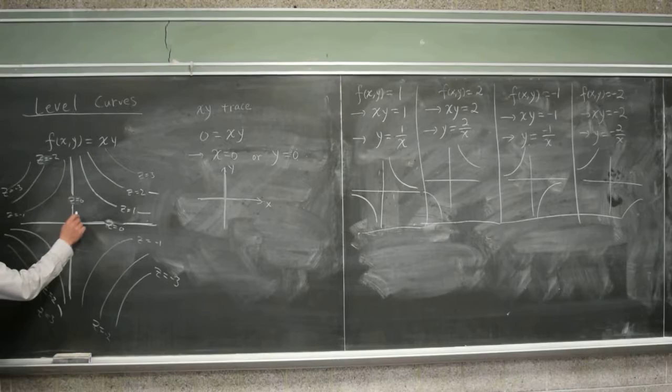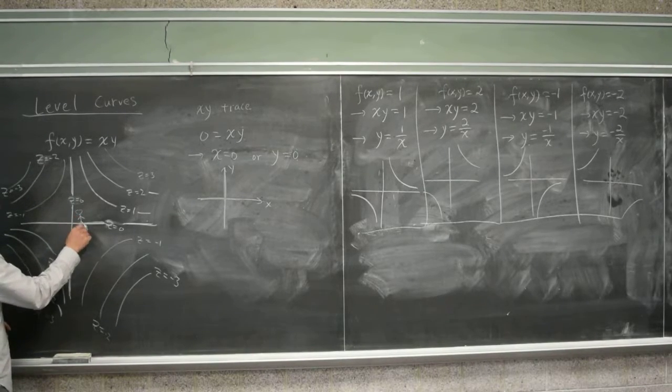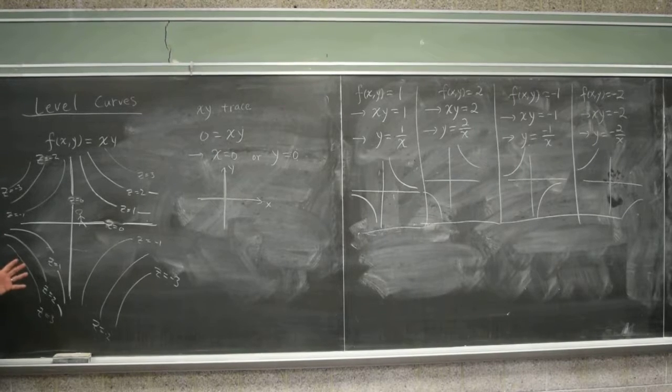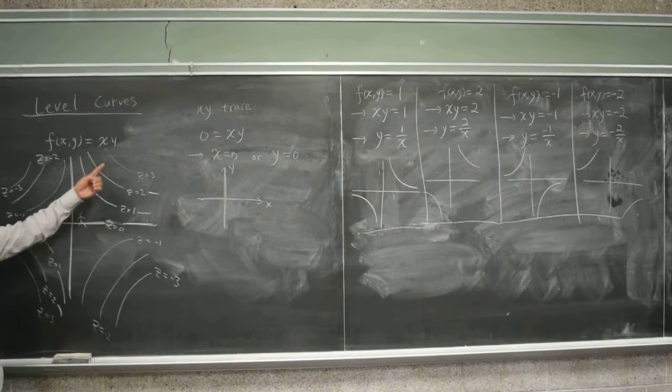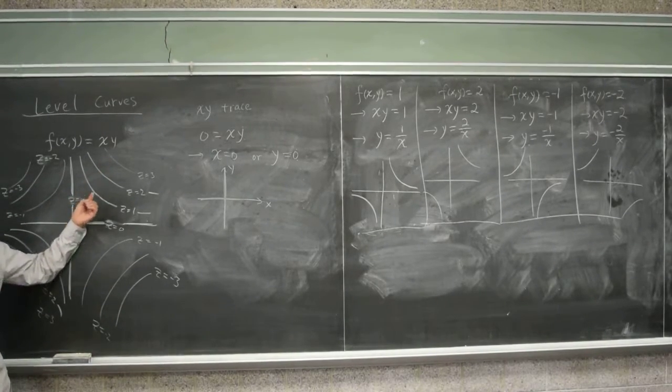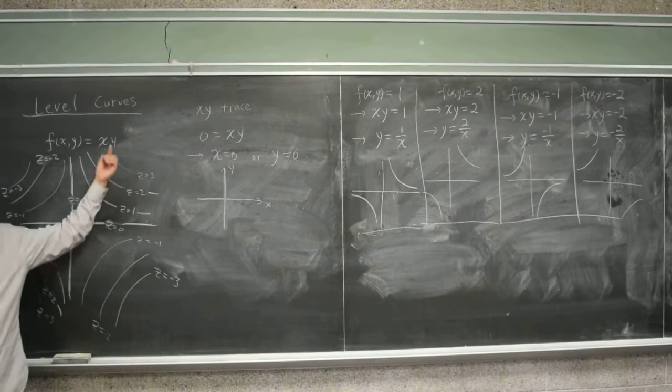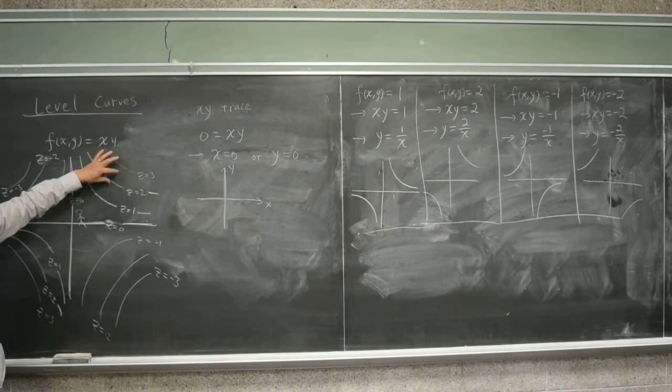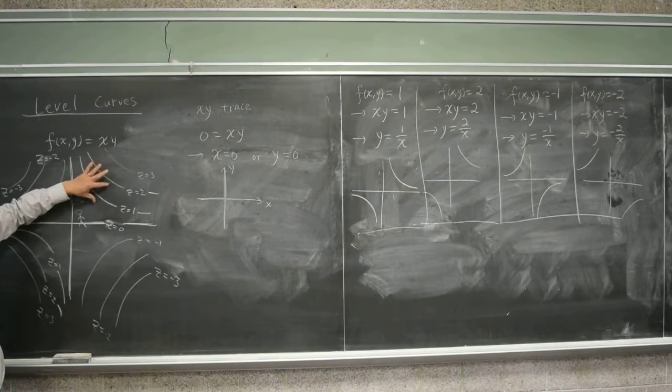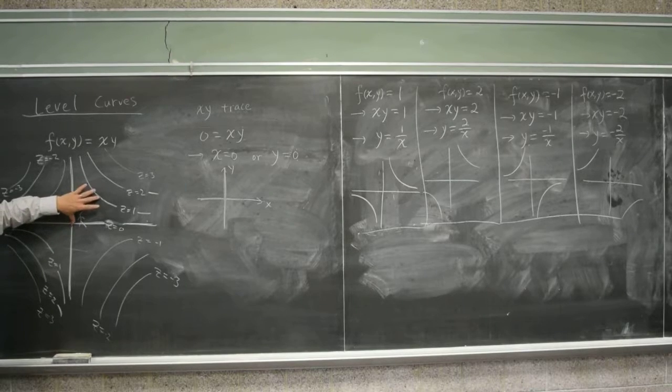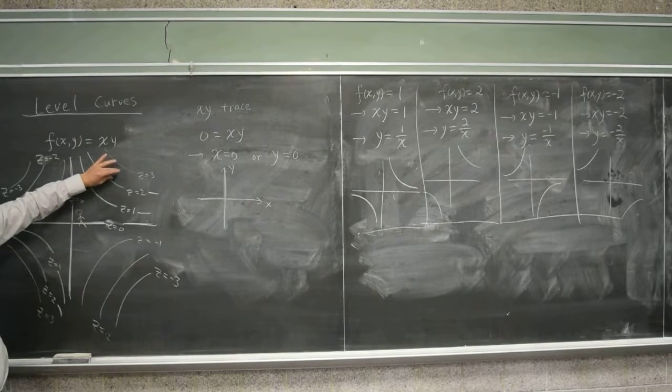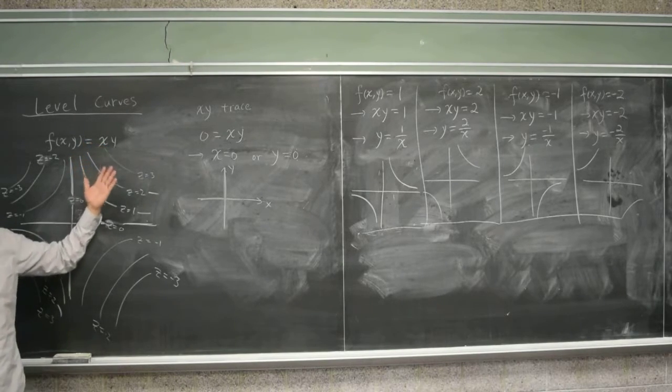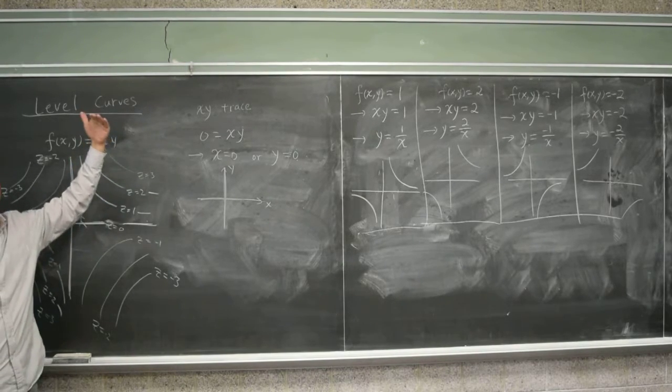And if you imagine yourself as a traveler in this strange world, you would recognize that if you're trying to go this way, what's happening? Steeper. You're going up. It's getting steeper and steeper. Actually, I should have made these distances smaller. But what happens is that these distances will become smaller and smaller, which means it's rising up faster and faster. So it goes up steeper.